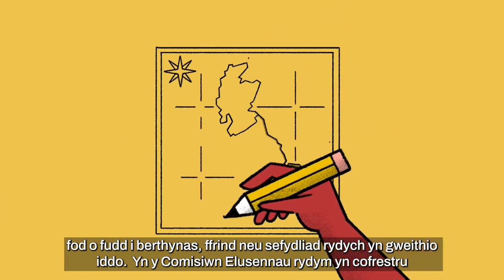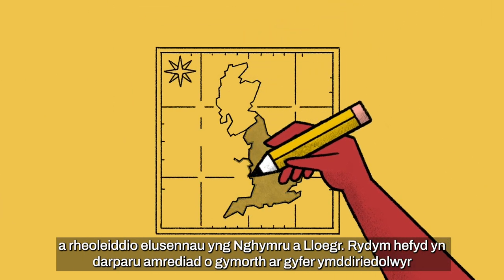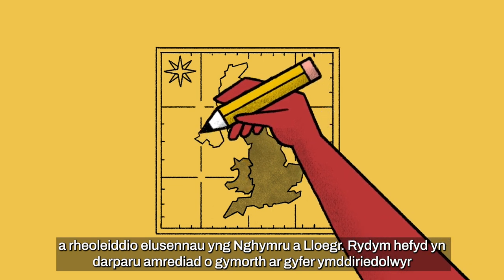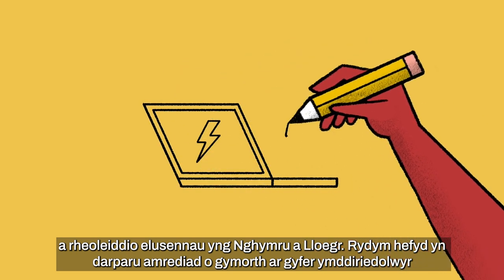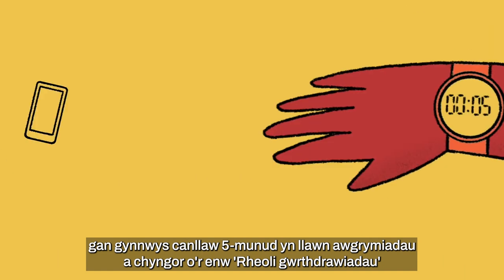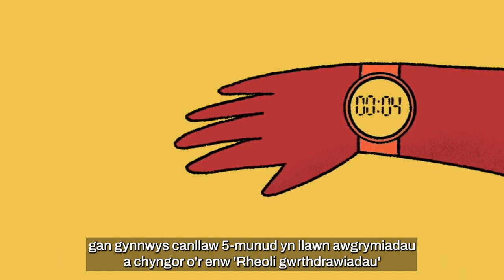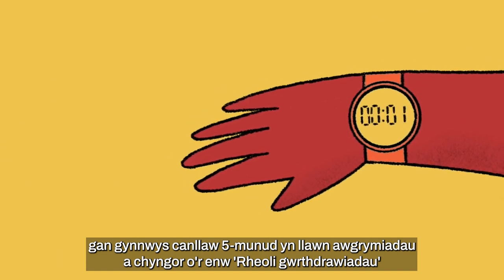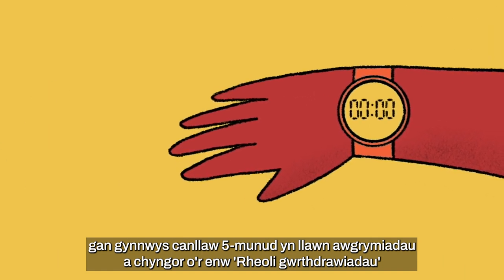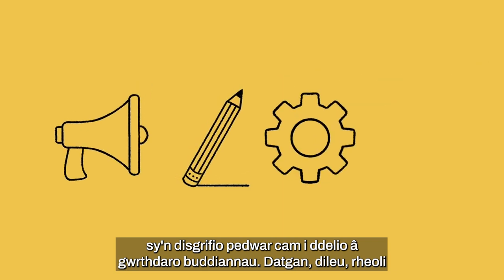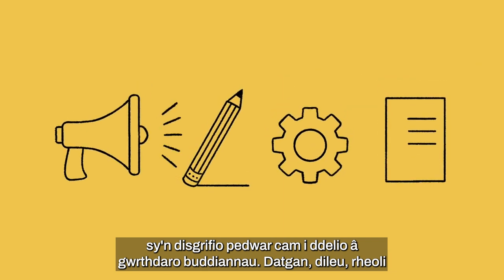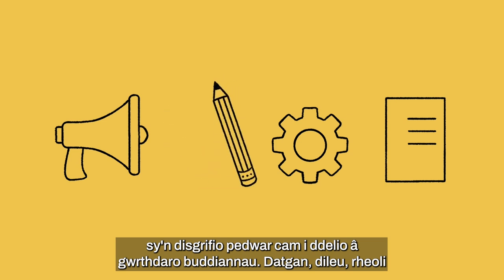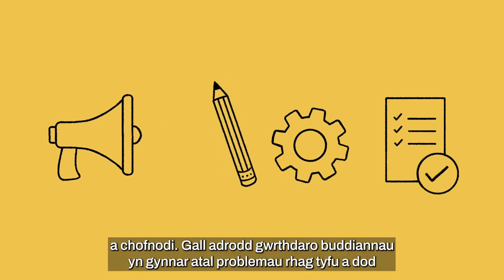At the Charity Commission we register and regulate charities in England and Wales. We also provide a range of support for trustees, including a five-minute guide full of tips and advice called Managing Conflicts, which describes four steps to dealing with conflicts of interest: declare, remove, manage and record.